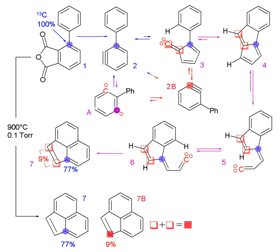Another application of isotope labeling is measuring DNA synthesis — that is, cell proliferation in vitro — using H3-thymidine labeling to compare patterns of synthesis in cells.